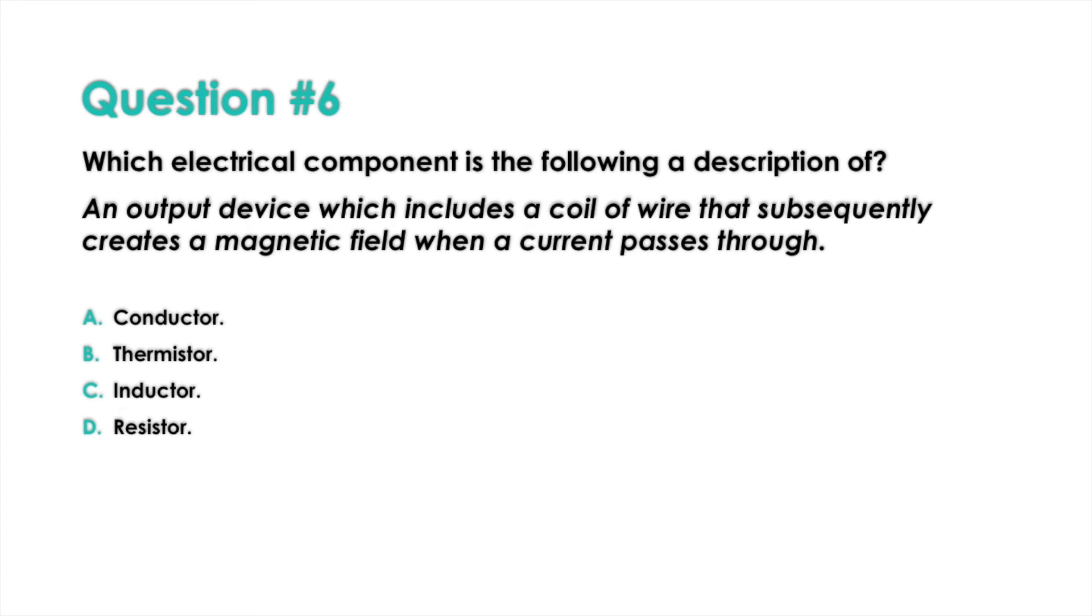Question 6: Which electrical component is the following a description of? An output device which includes a coil of wire that subsequently creates a magnetic field when a current passes through.